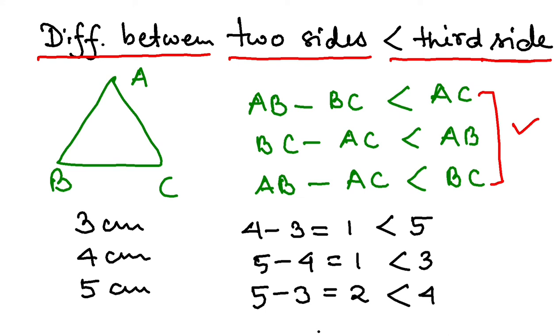So all three conditions are held true, and that means you can have a triangle having these lengths: three centimeters, four centimeters, and five centimeters. I hope you have understood this property. We are covering the properties of triangles. Next up we have two more properties, so in the next video let's try to learn those.